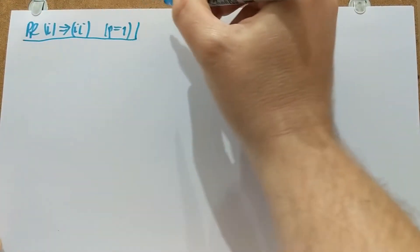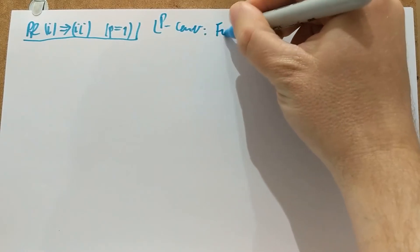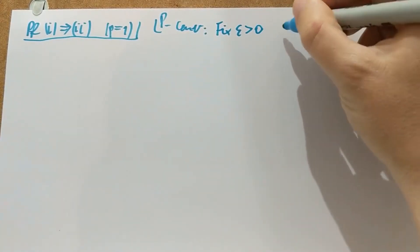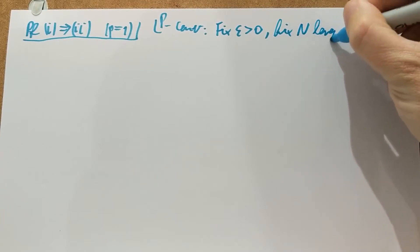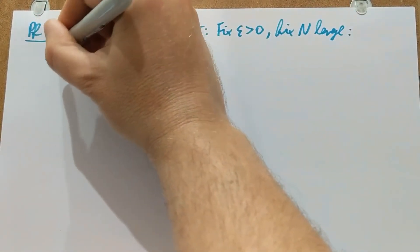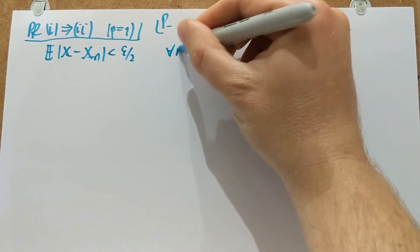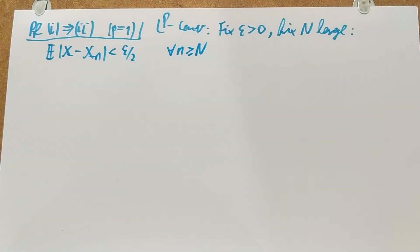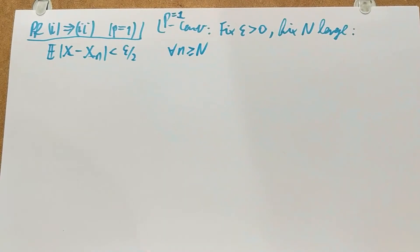We have LP convergence, and because we have LP convergence that will imply two things for us. First, fix a positive epsilon, and then for that epsilon there is a large enough N — not random, just a fixed large enough N — such that we have the expectation of |X minus Xn| smaller than epsilon over two whenever we have an index larger than this critical capital N. This is just a simple consequence of L1 convergence.